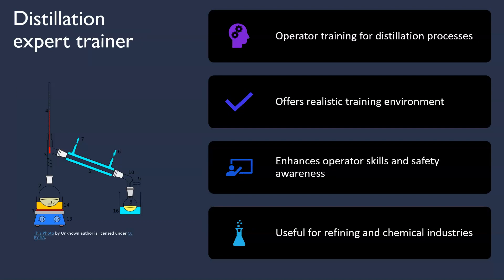Coming to the Distillation Expert Trainer. Enhancing operator skill and safety awareness is crucial in chemical engineering. Distillation Expert Trainer is a software tool especially designed for operator training in distillation processes. By utilizing this software, operators can develop their expertise, improve plant safety and enhance their efficiency.